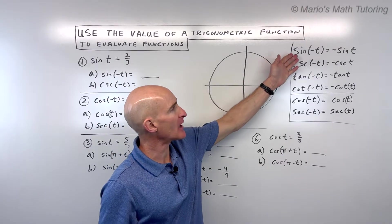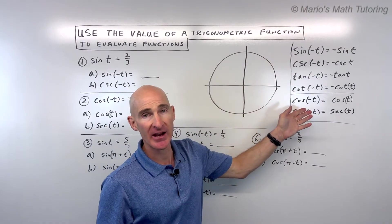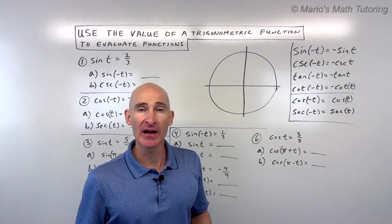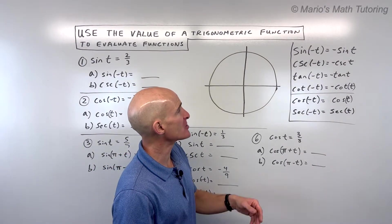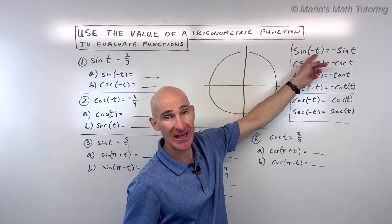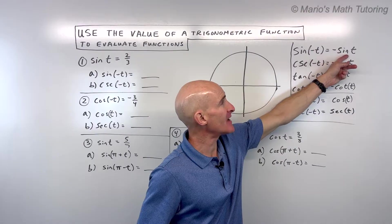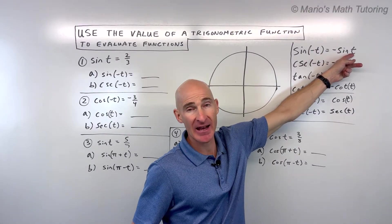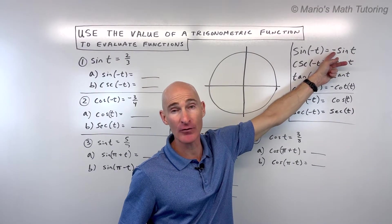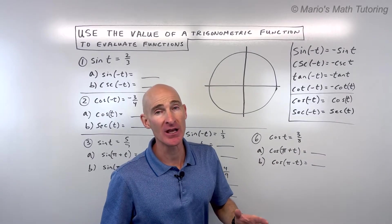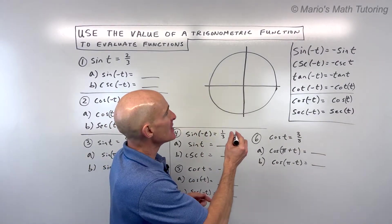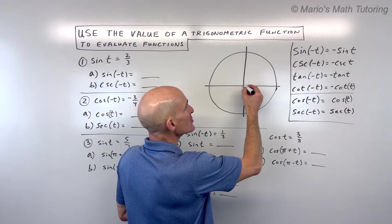The first thing you want to refresh on are the even and odd identities. When you take the sine of a negative angle, you're going to get the same value as the sine of the positive angle, but it's going to be multiplied by negative 1. We call this an odd function.